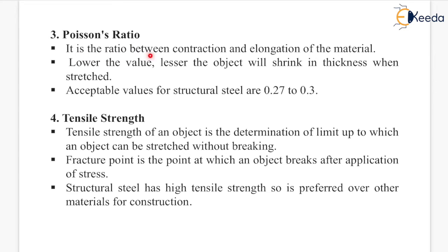Next is Poisson's ratio. It is the ratio between contraction and elongation of the material. The lower the value, the lesser the object will shrink in thickness when stretched. Acceptable values for structural steel are 0.27 to 0.30.